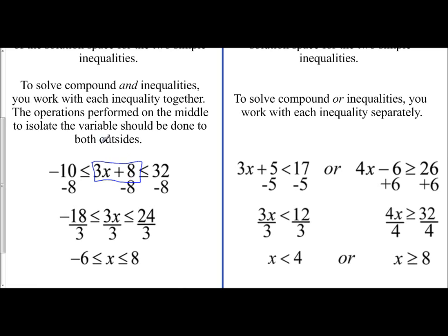But what you need to keep in mind is now there's two outsides to the inequality, not just one right side and one left side. We now have a left side of the inequality and a right side. So whatever you do to the middle to isolate the variable, you have to do to both outsides. And so I would subtract 8 from negative 10 and get negative 18.